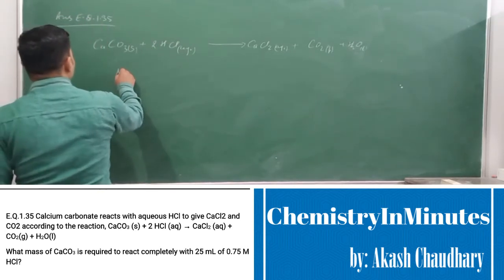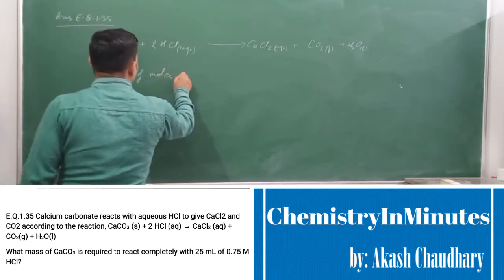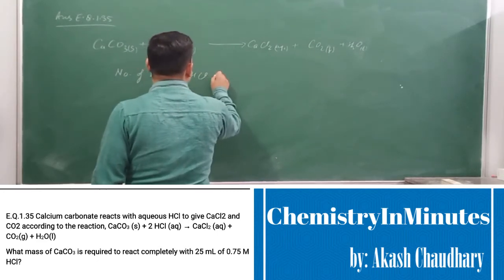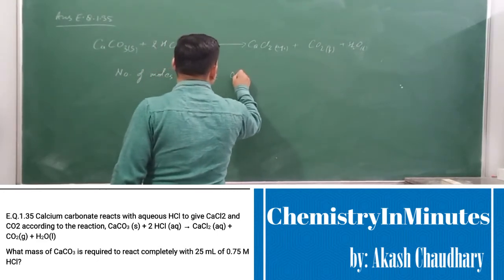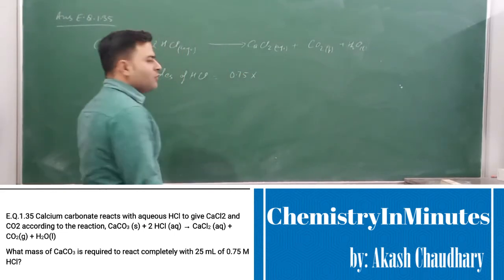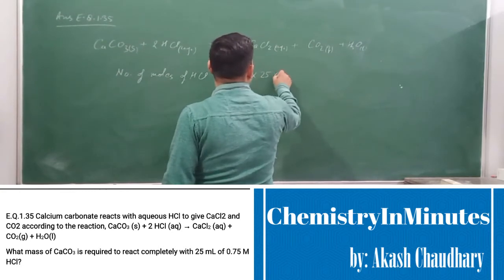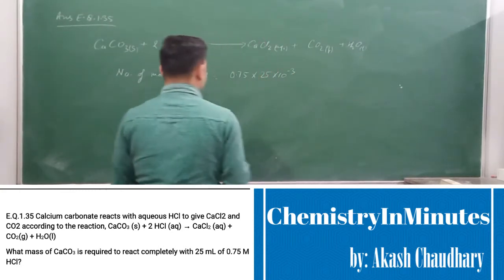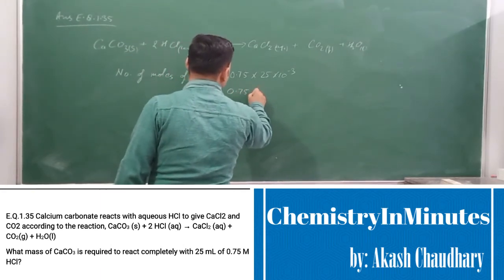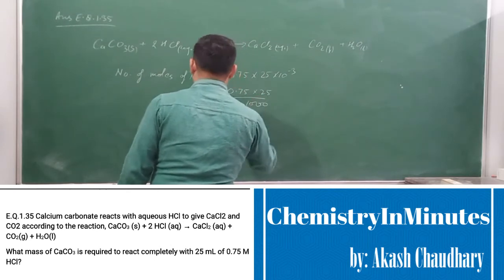Number of moles of HCl will be molarity 0.75 into volume 25 mL, and we need to convert this to liters, so 10 to the power minus 3. So we can write this as 0.75 × 25 / 1000.